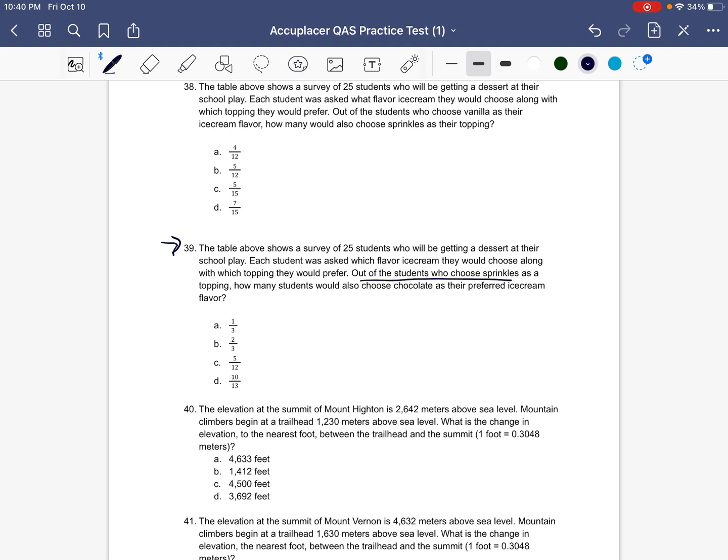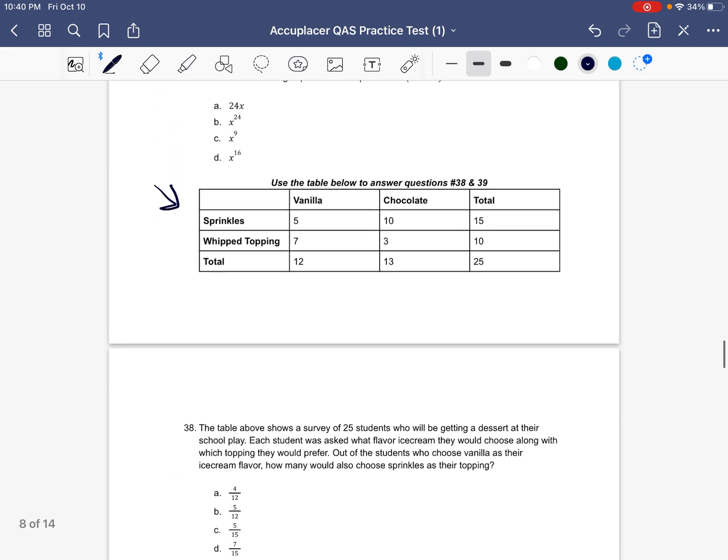So out of all the students who chose sprinkles, how many students would also choose chocolate? Let's go ahead and look at the students who chose sprinkles. Sprinkles is here, that means we're looking across at this row. Out of all the students who chose sprinkles, that is going to be our denominator. The total number of students who chose sprinkles is 15. And out of those 15 students who chose sprinkles, how many chose chocolate? So chocolate is here, so 10 chose chocolate.